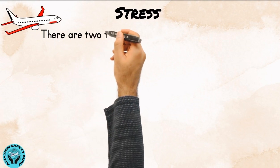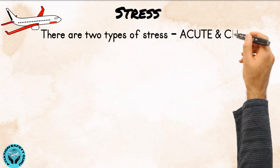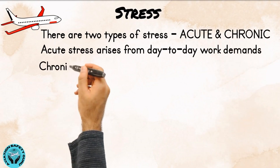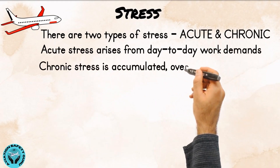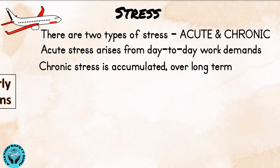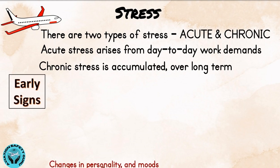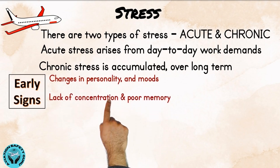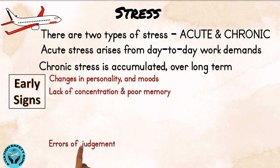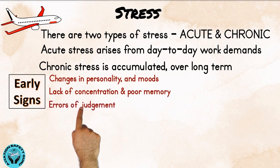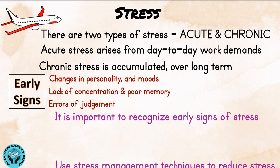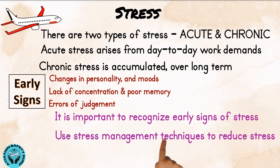Stress: in the aviation environment, there are two types of stress — acute and chronic. Acute stress arises from day-to-day work demands, whereas chronic stress is accumulated over the long term. Some early signs of stress include changes in personality and moods, lack of concentration and poor memory, and errors of judgment. Therefore, it is important to recognize early signs of stress and use stress management techniques to reduce it.